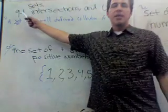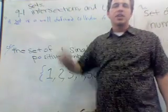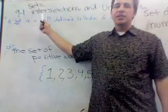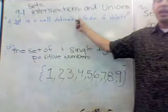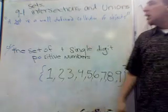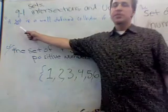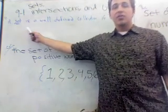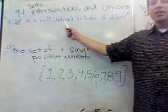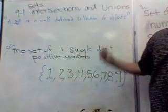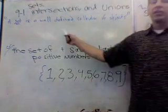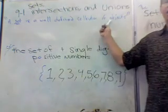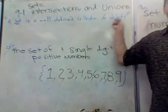We're working on section 9.1 from your textbook. This is all about sets, intersections, and unions. First of all, a definition of a set: a set is a well-defined collection of objects.